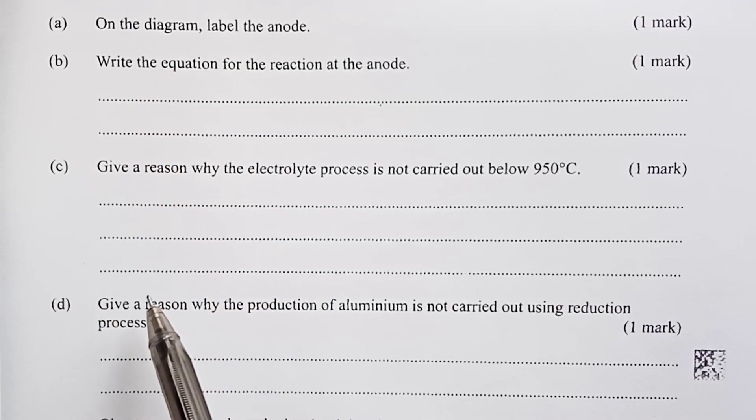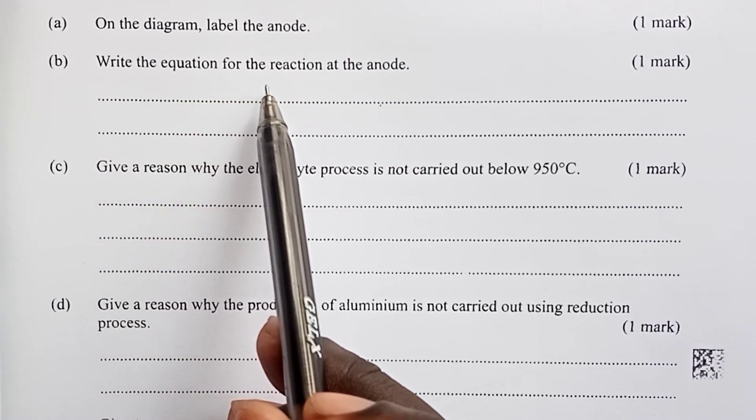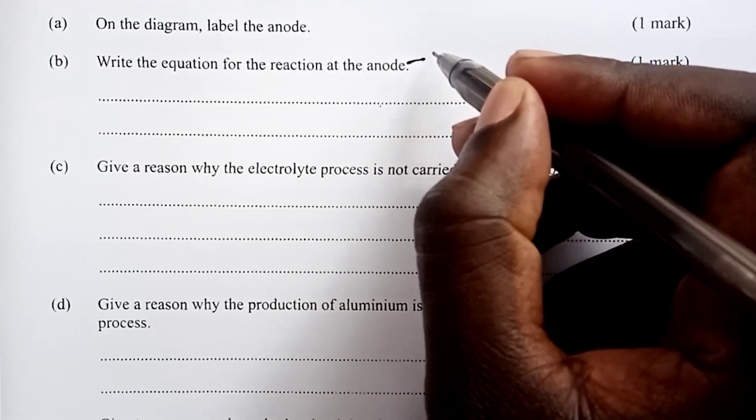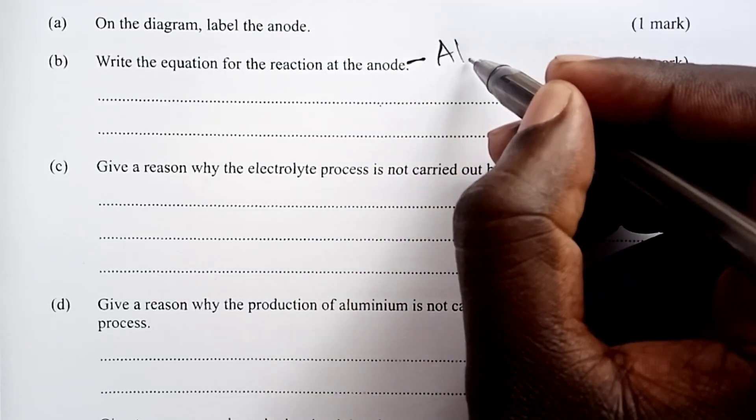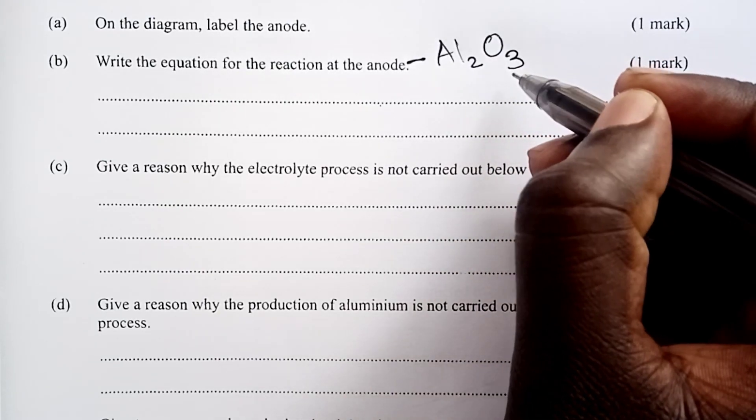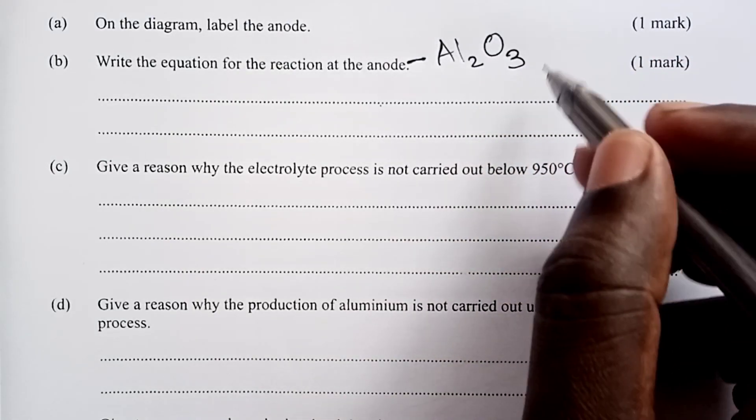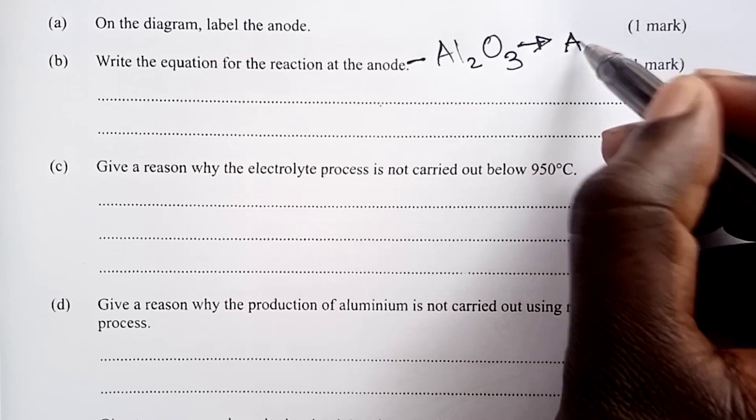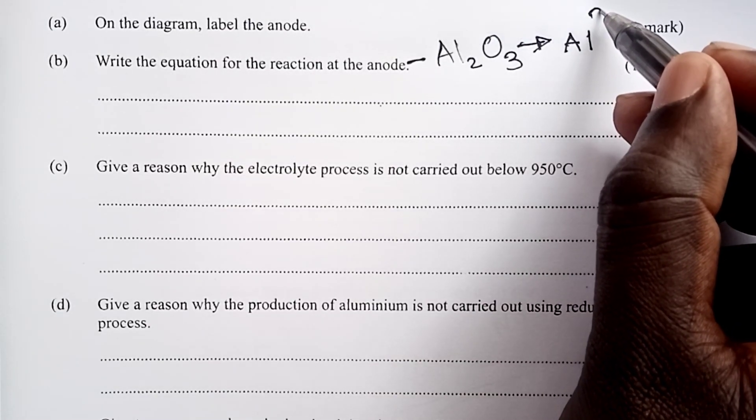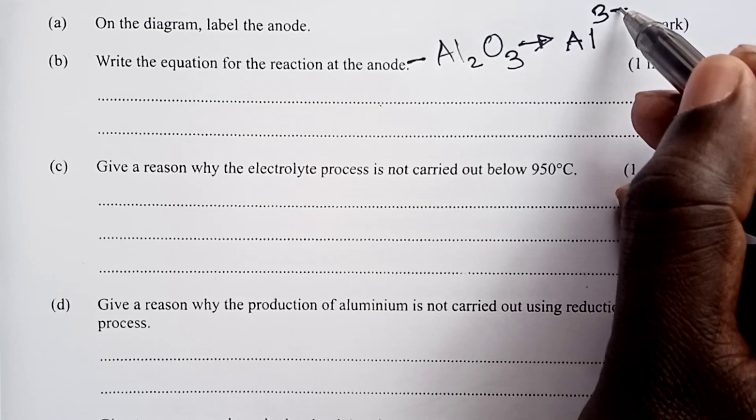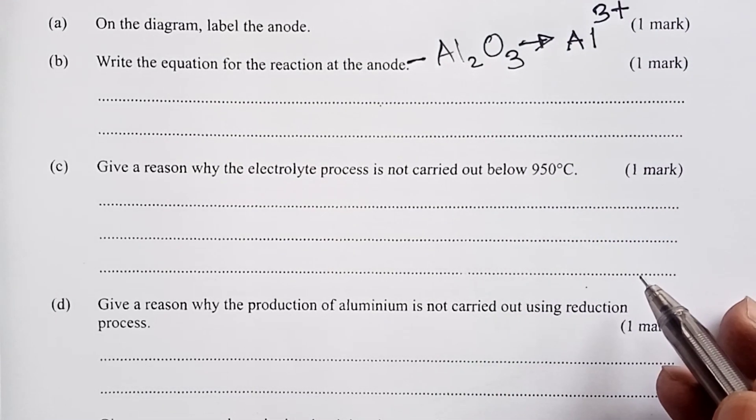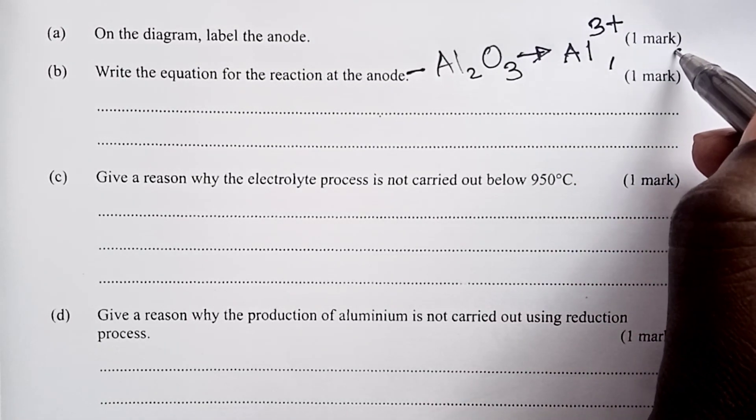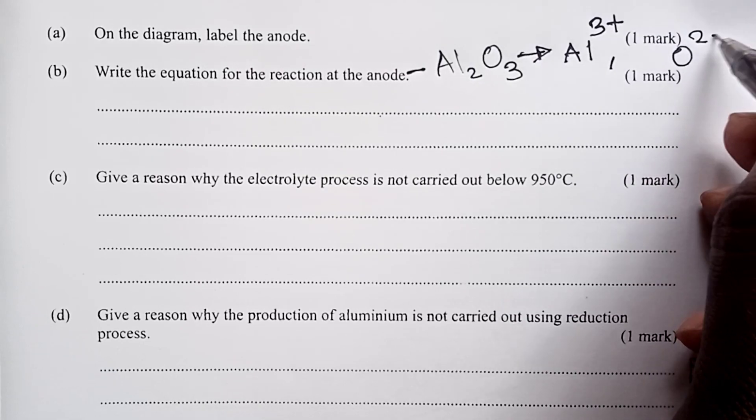Moving on to part B, write the equation for the reaction at anode. We know that our electrolyte is actually molten aluminum oxide. Now, being molten, in the electrolyte, we have two types of ions. There are only two types because we are using a molten substance. This is what we normally call binary electrolyte. In the electrolyte, we will have only aluminum ions and oxide ions.